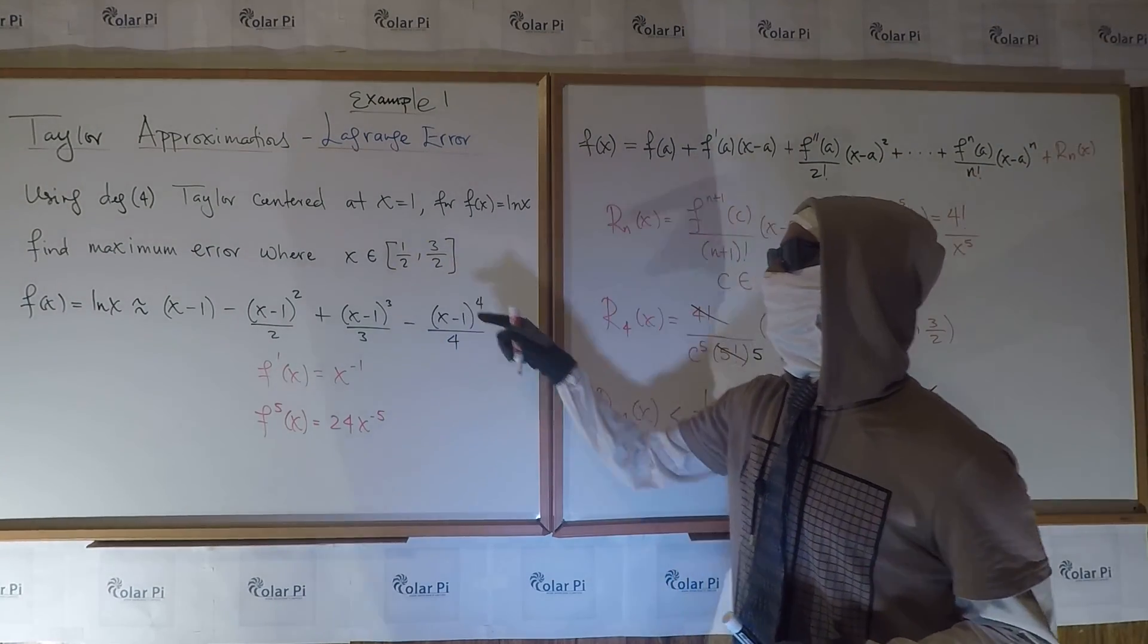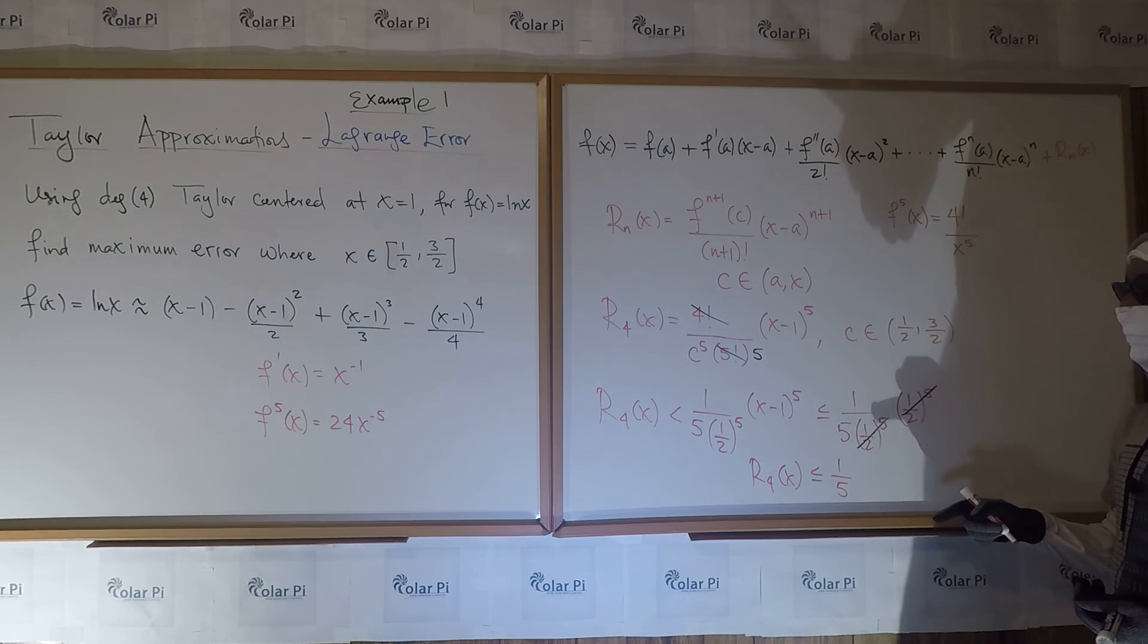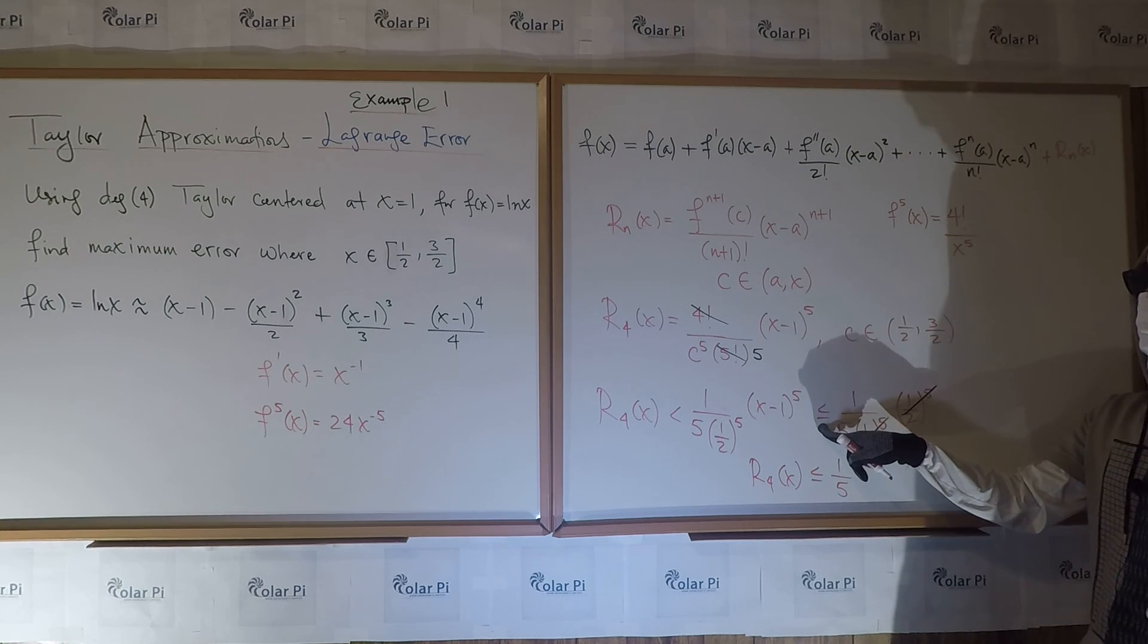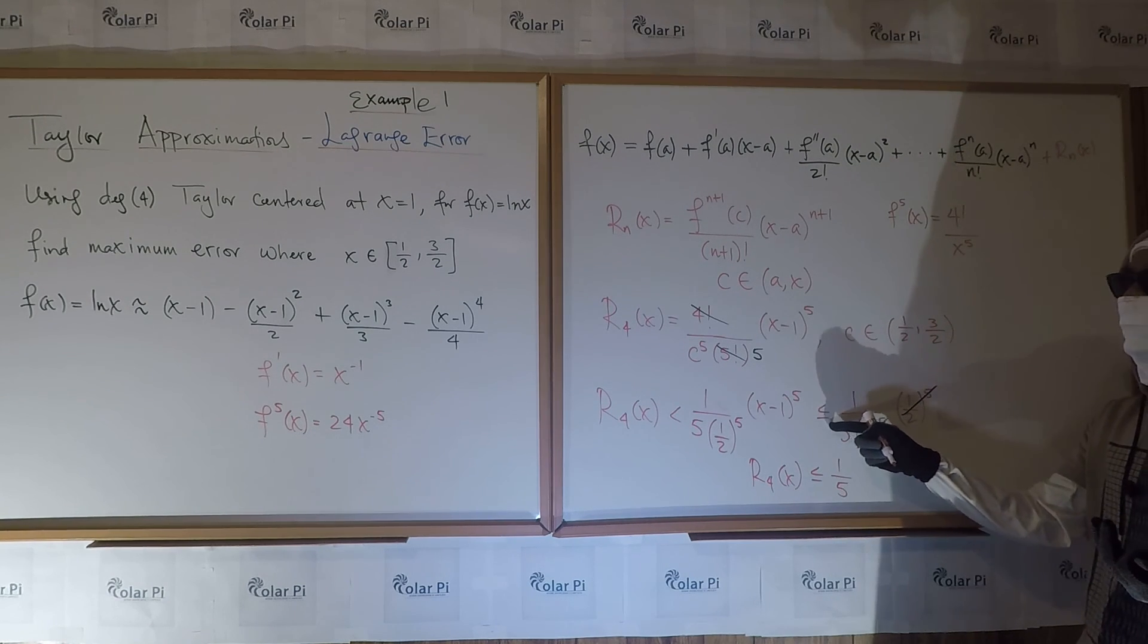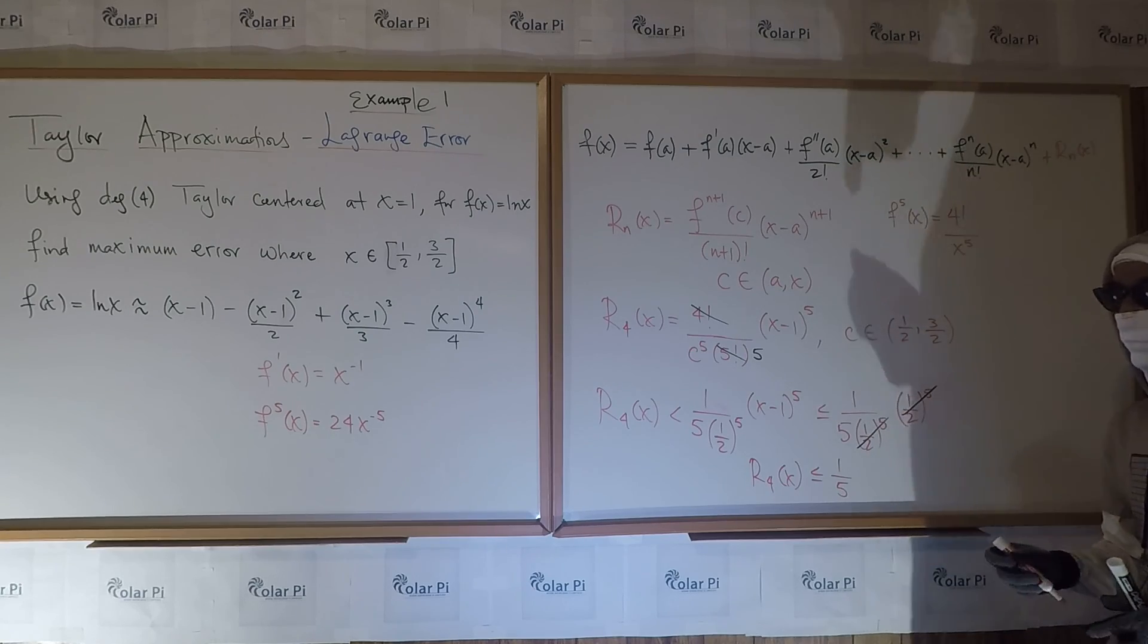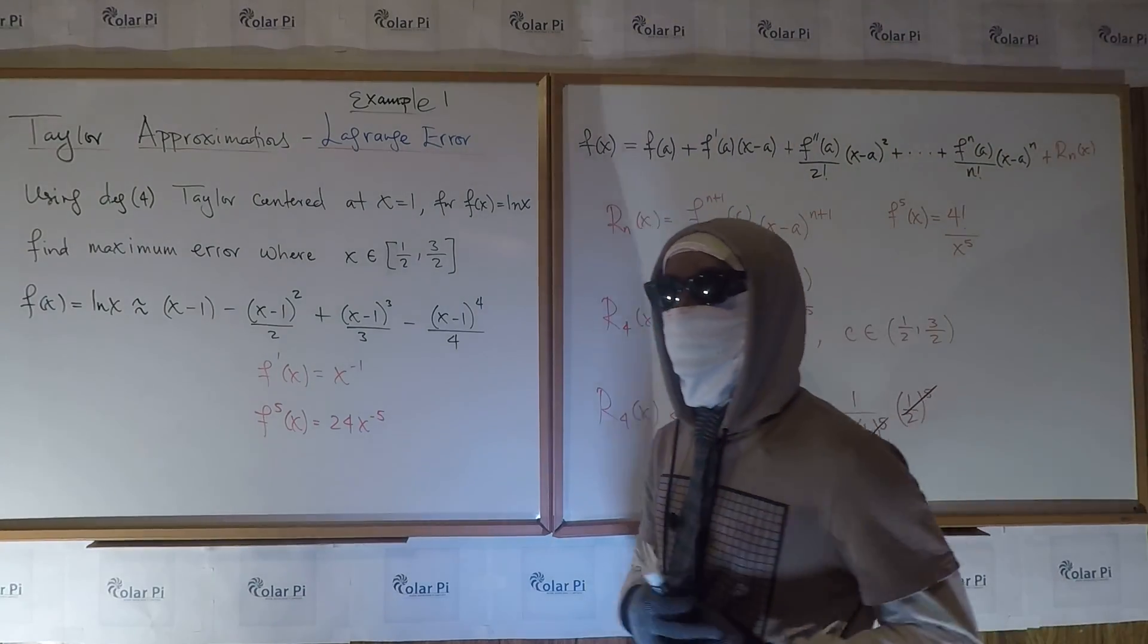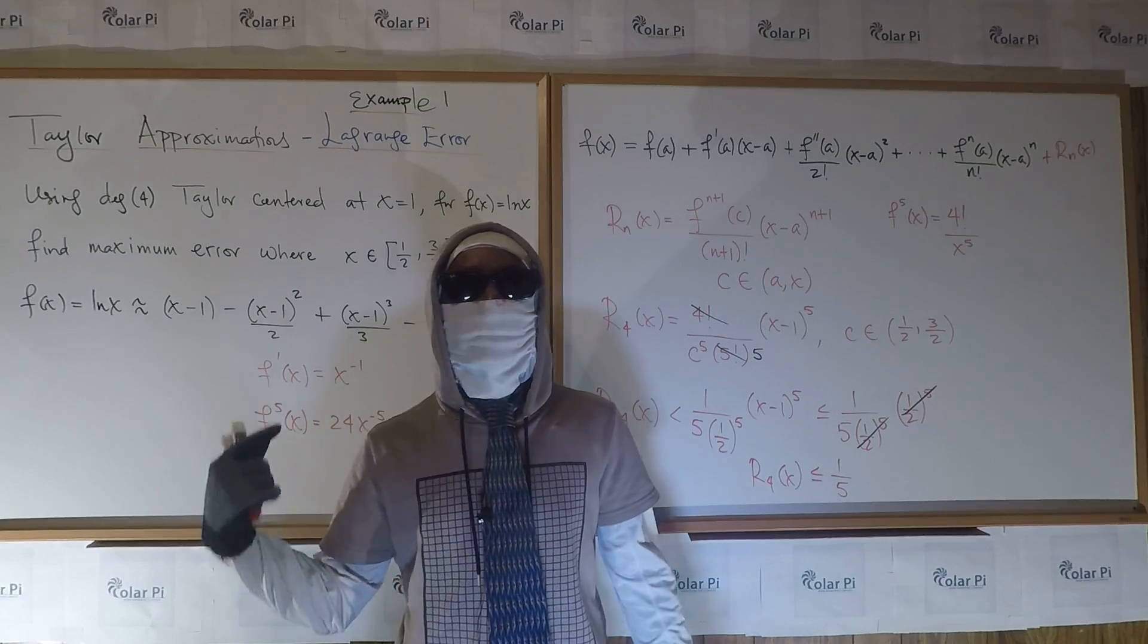And I guess before I conclude, I should tidy up why this is less or equal to. Well, x is in here. And so when x is three-halves, that justifies the equal to part. For any other x it's going to be less than, and therefore less than or equal to. All right. Cool. I hope you understood this. And otherwise, leave me questions.